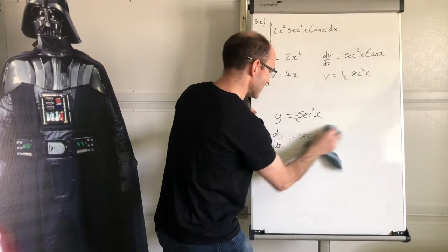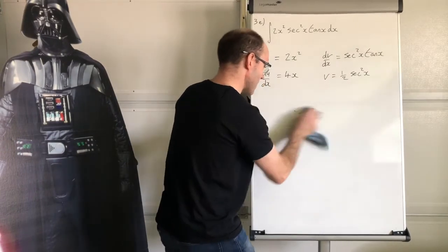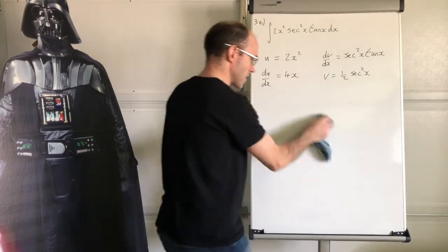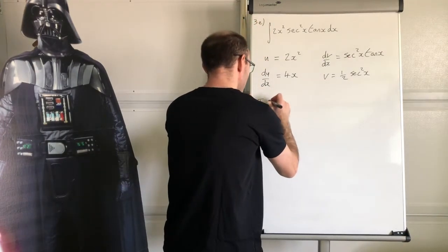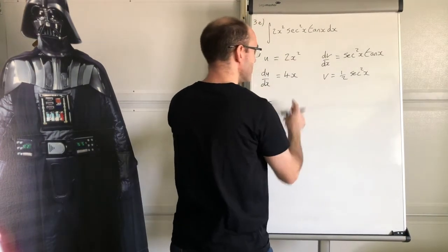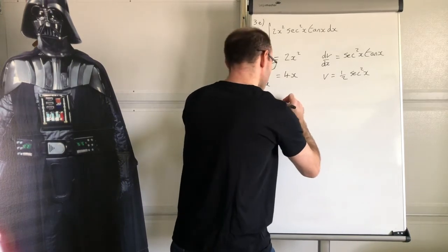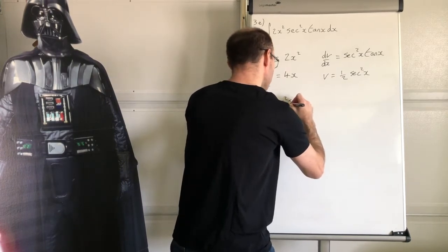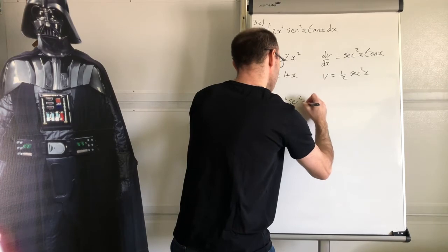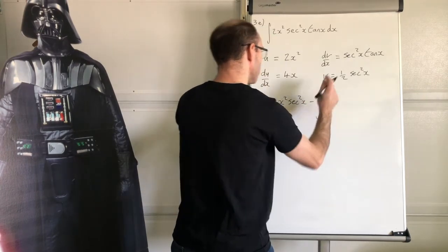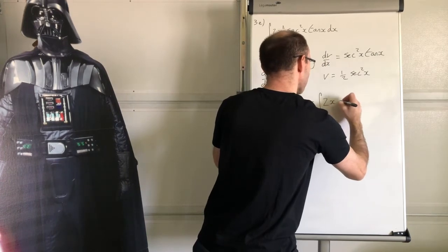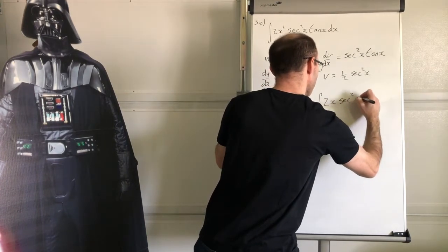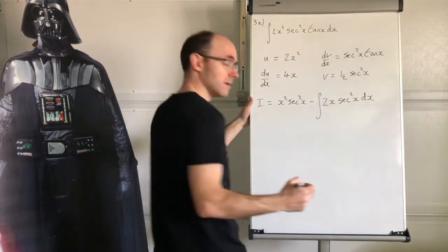So let's just get rid of this now and work out what that is. So the integral then becomes uv, that times that, so two times a half, so that's going to be x squared sec squared x, and then subtract integral of v du/dx, so half times four is two, that's going to be 2x sec squared x dx.